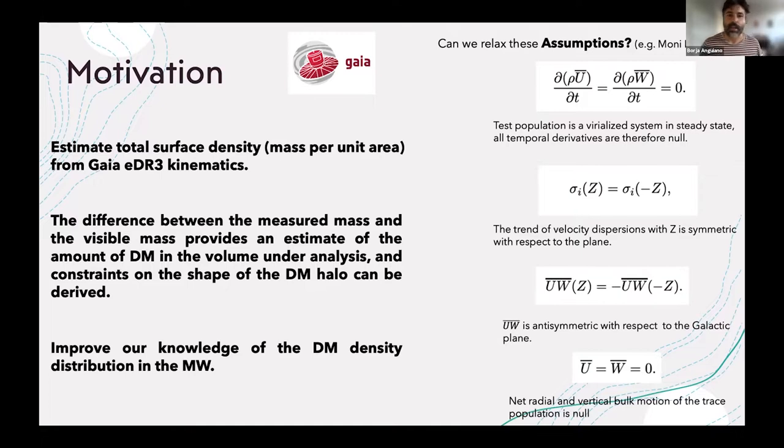There are a lot of assumptions that in the past, when we approach this exercise using the Jeans equation, there is a good number of assumptions. For example, everything's in a steady state, so if you put the temporal derivatives there, you have to assume that the galaxy is in equilibrium. The galaxy is not in equilibrium. There are everyday papers showing that this is not true.